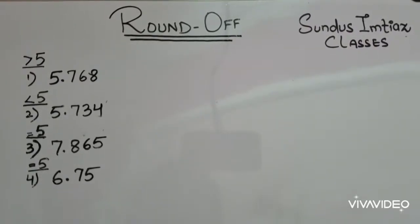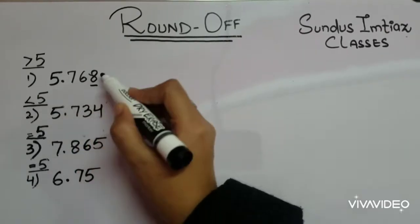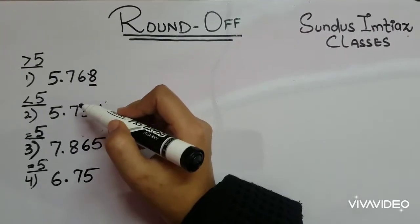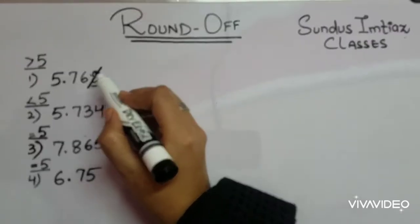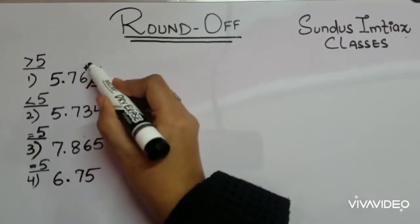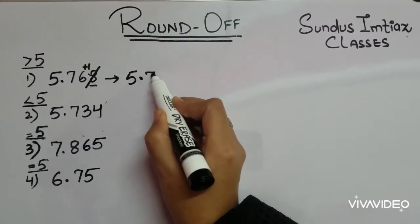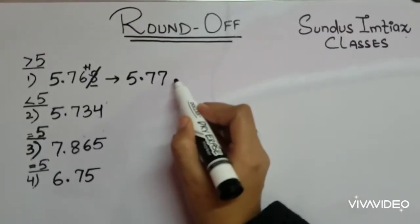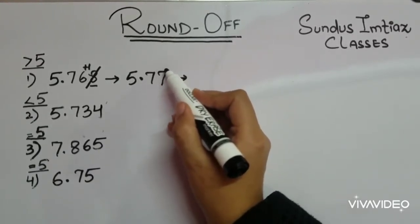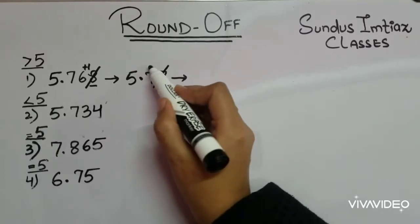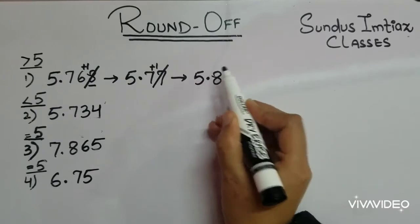Let's see the first condition. First condition, you can see last digit is greater than 5. When it becomes 5, we will drop it and add it to the next digit. Now it is 5.77. Again, you can round off, last digit is greater than 5. So we drop this one, we add plus 1 to the next digit and we get 5.8.